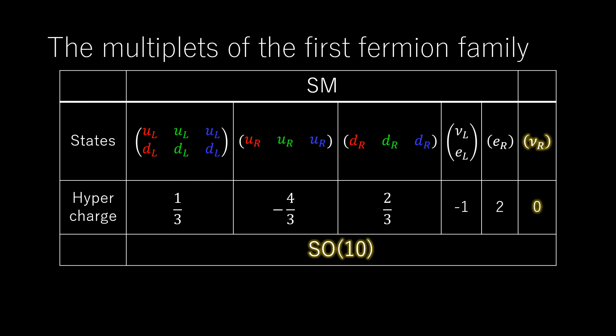In the SO(10) GUT, all of the standard model fermions can be put into a single multiplet of SO(10) containing 16 states. The 16th state, which is missing in the standard model, has just the right quantum numbers to be a right-handed neutrino. Moreover, the right-handed neutrino Majorana mass is expected to be around M_GUT, nearly equal to 10 to the 15th GeV, which is roughly what is required for the seesaw mechanism.